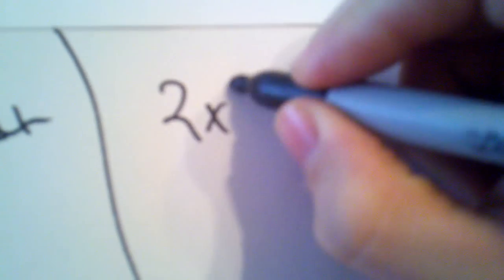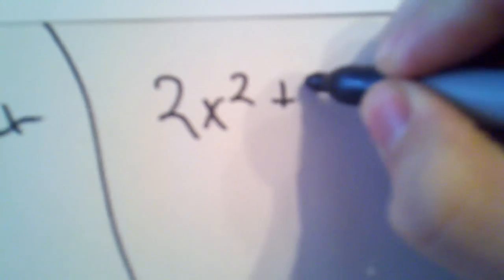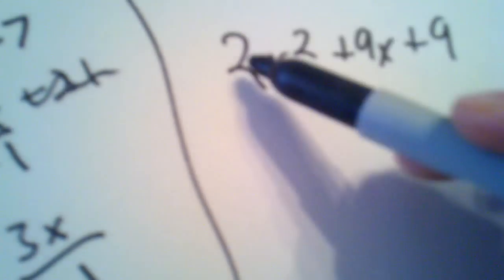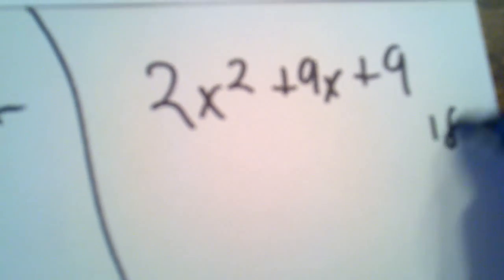Let's try another one. Now, for this one, we'll have 2x squared plus 9x plus 9. Now, again, we'll multiply these out, and that equals 18.